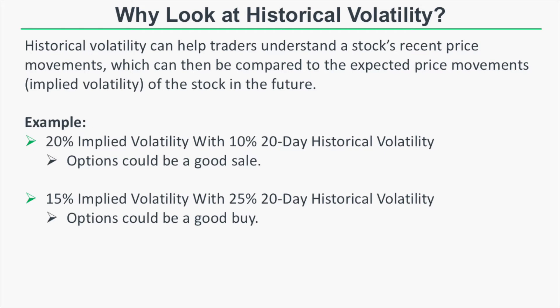In this case, the options could be a good sale because the options imply a 20% move, but the stock's recent price movements are only as volatile as 10% annualized. On the other hand, a stock with 15% implied volatility but 25% annualized historical volatility could be a good buy. Obviously, these aren't perfect examples because a stock's volatility can change and strategies have other exposures beyond volatility — these are just hypothetical examples.